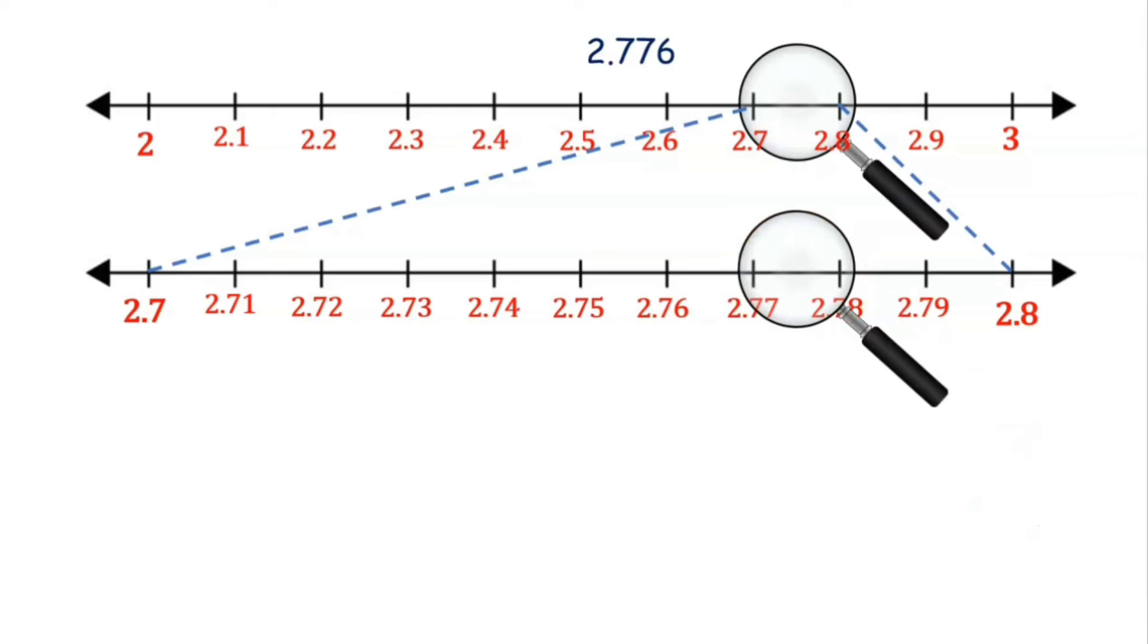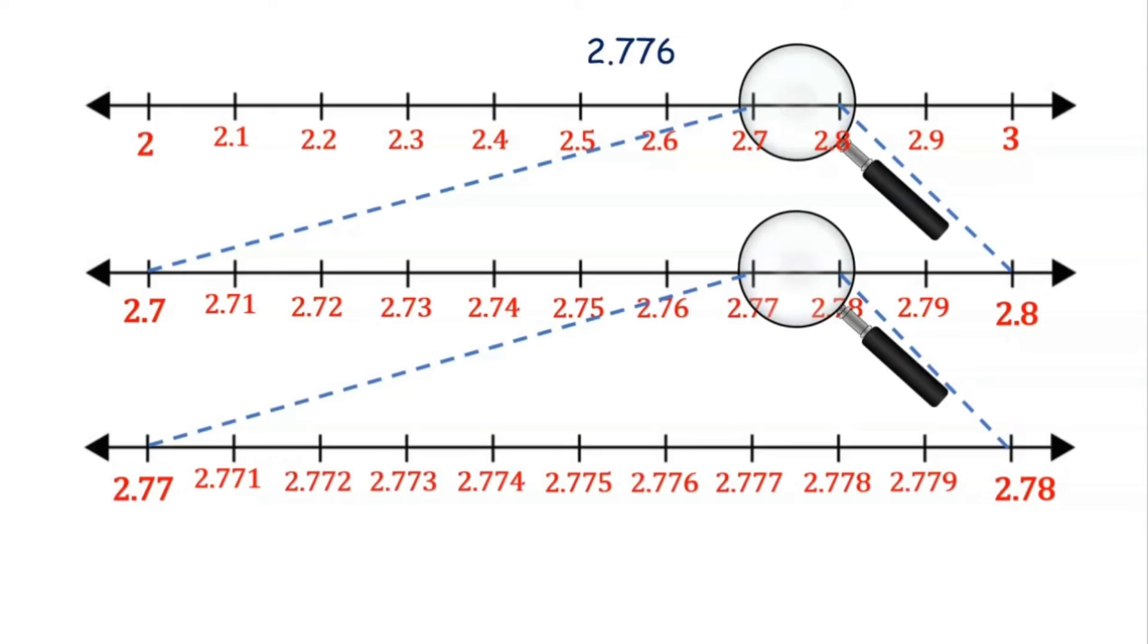Assuming using a magnifying glass, this portion again has been divided into 10 equal parts, and the markings will be 2.771, 2.772, 2.773, and so on up to 2.78. Now we see clearly our number 2.776 is the sixth mark in these subdivisions.